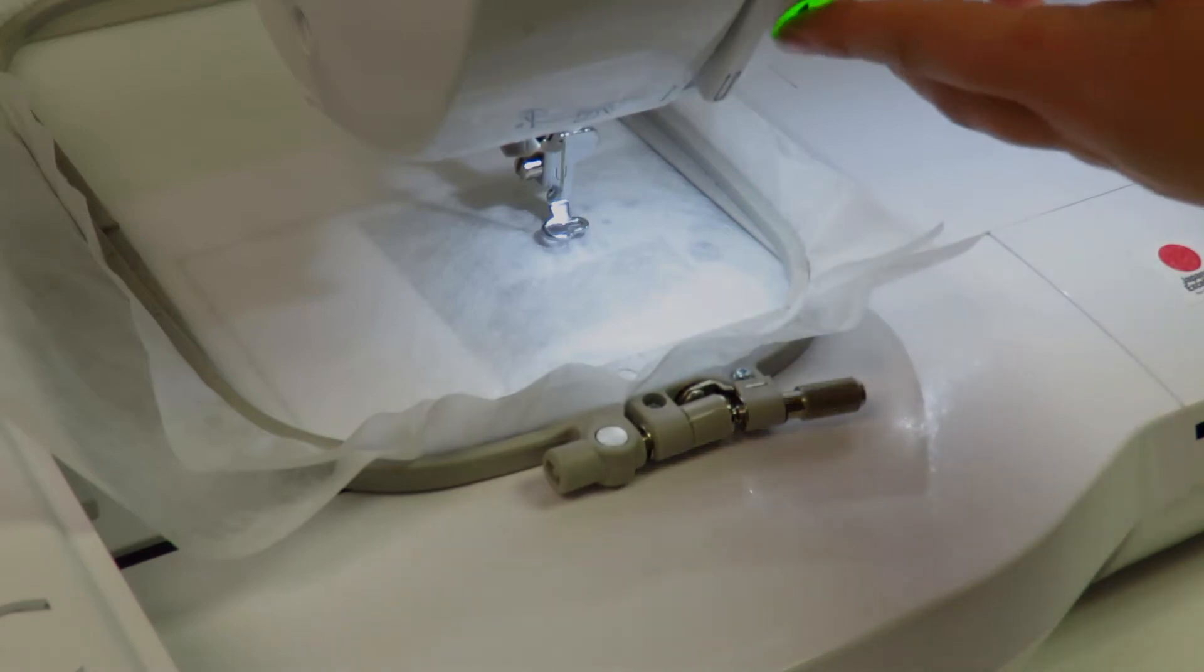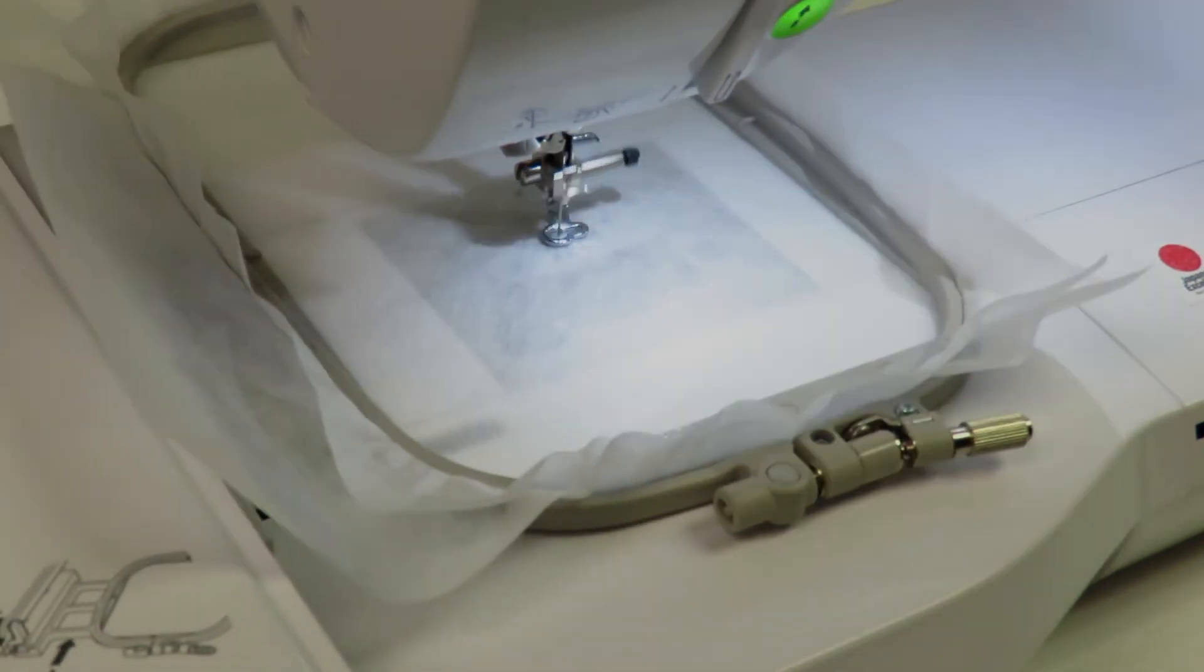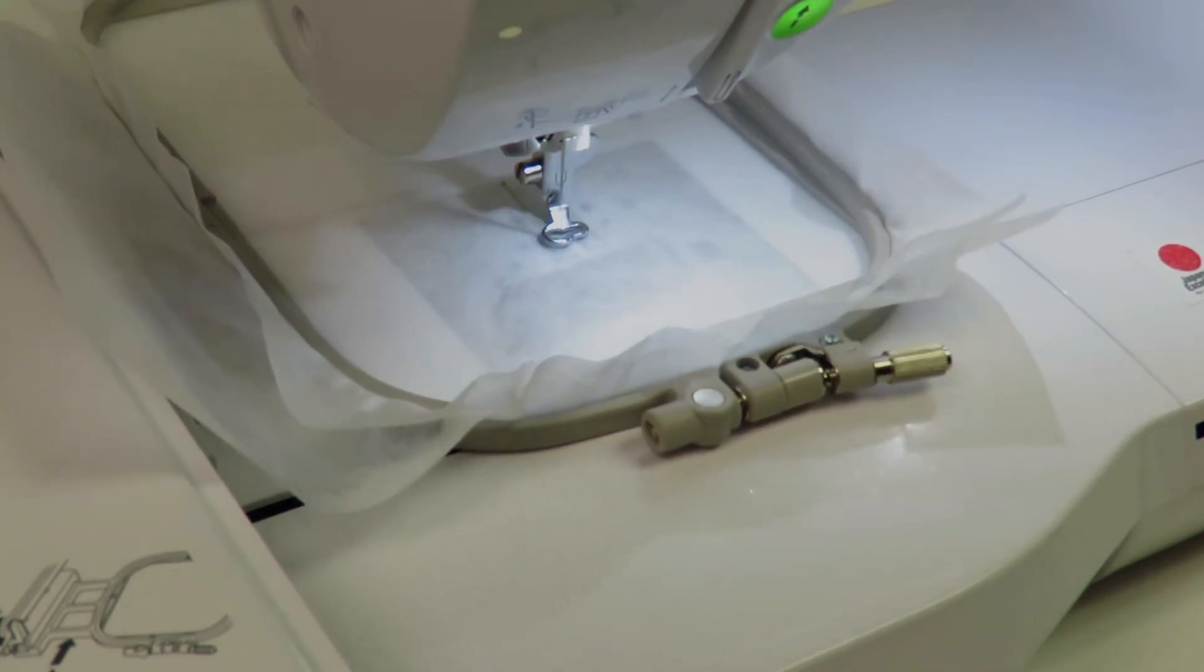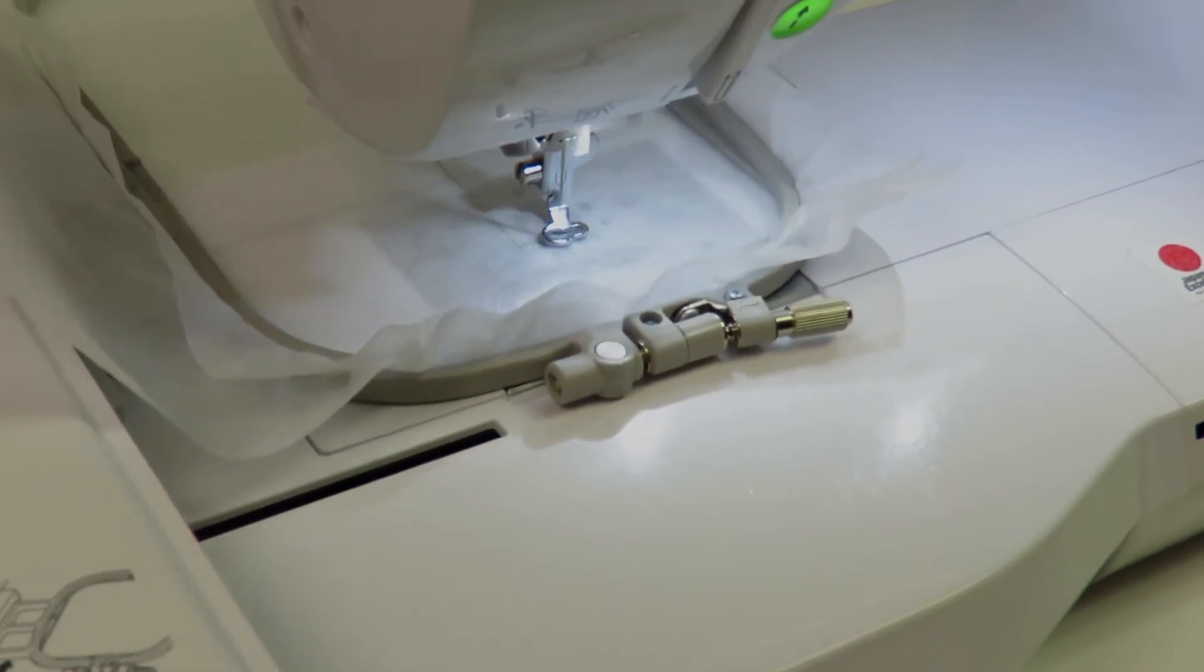Select the freestanding lace pattern and move it into the corner of the embroidery frame to save product. Ensure that the bobbin is wound with the same color thread as the top thread, as this is necessary for freestanding lace.